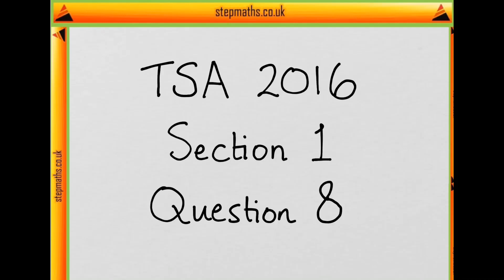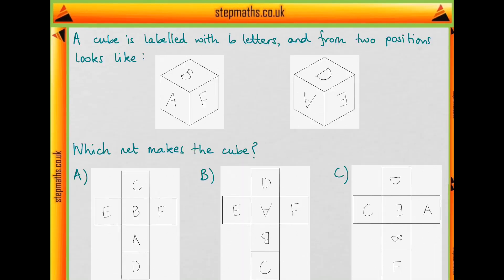Hello, this is question 8 on section 1 of TSA 2016. We've been given a cube that's labelled with a letter on each of its six sides, and we've been given the view from two different positions. We want to know which of these nets will make this cube.